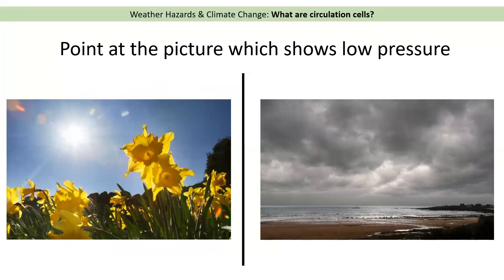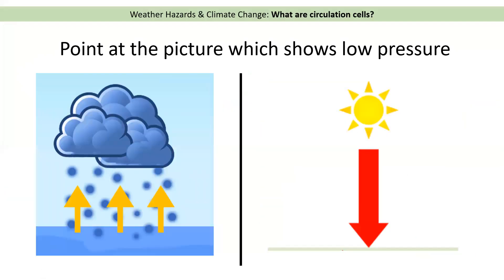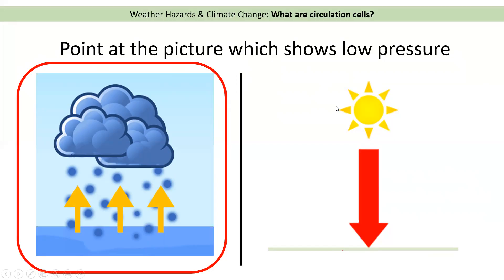Let's check understanding: point at the picture which shows low pressure. The first one we should have pointed at the cloudy picture — there may be some rain there as well, that's low pressure. The sunny blue sky picture is high pressure. Then again, point at the picture showing low pressure: we should point at the one on the left, because the air is rising and very light, so water can evaporate, giving us clouds and rain.